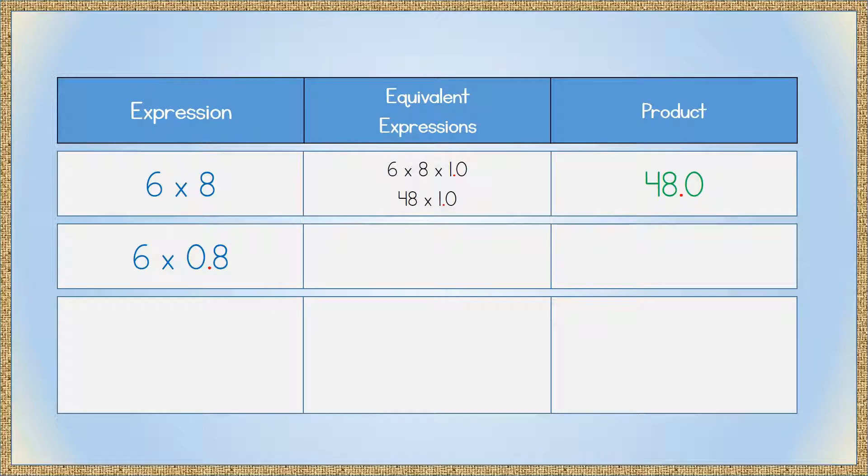How about 6 times 8 tenths? Again, the digits look pretty similar, right? This time, the 8 is in the tenths place. There's a decimal point involved, and a 0 in the ones place as a placeholder. Equivalent expressions to this would be 6 times 8 times 1 tenths, or 48 times 1 tenths. The product for this, watch the decimal point here, 4 and 8 tenths.